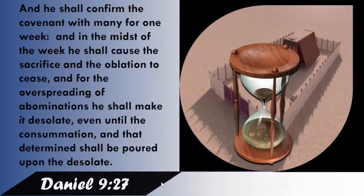When we come to Daniel chapter 9 verse 27, the Bible says, and he shall confirm the covenant with many for one week. Get it well. And in the midst of the week he shall cause the sacrifice and the oblation to cease. And for the overspreading of abominations, he shall make it desolate, even until the consummation, and that determined shall be poured upon the desolate.